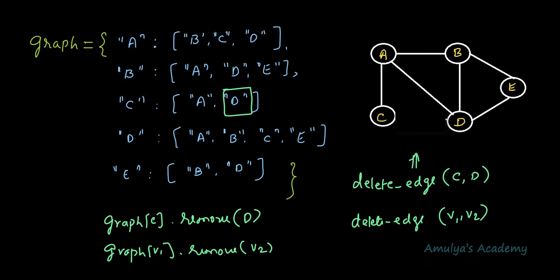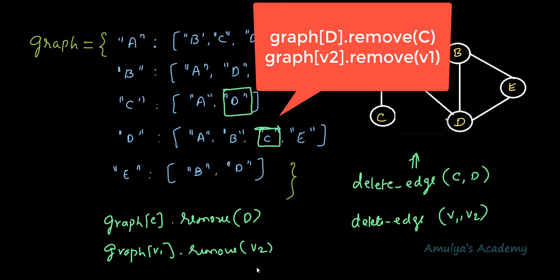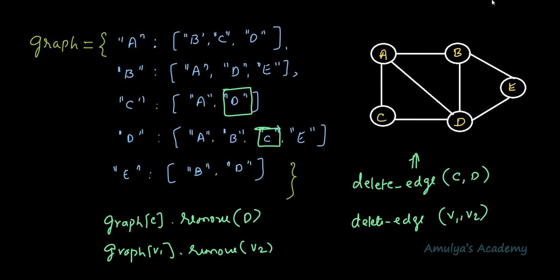Also, now there is no edge from D to C, so D is not adjacent to C. We need to do changes in the value of key D as well — we need to remove C from it. So we perform graph[V2].remove(V1), that is graph[D].remove(C) from the value of key D. This is for the unweighted undirected graph.